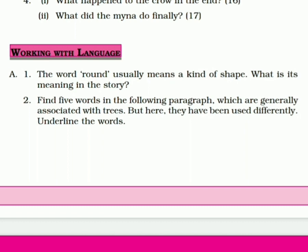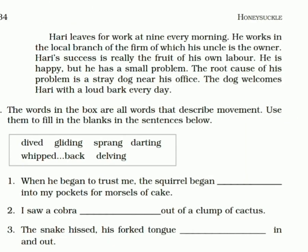Next hai aapka: 'Find five words in the following paragraph which are generally associated with tree.' Ye paragraph diya hua hai aapko jahaan se aapne find karne hai: 'Hari leaves for work at nine every morning. He works in the local branch of the firm of which his uncle is the owner. Hari's success is really the fruit of his own labor. He is happy but he has a small problem. The root cause of his problem is a stray dog near his office. The dog welcomes Hari with a loud bark every day.' Isme kuch aise words hai jo trees related hai. Ek example mein aapko dhoongi — jaise 'Hari leaves.' Leaves ke hoti hai patiyaan, lekin yahan ke liye nikalta hai. Leaves that is associated with tree, it is a part of a tree. Isme aapke bahut se parts of trees diye hai. You have to find out those parts and list them down.